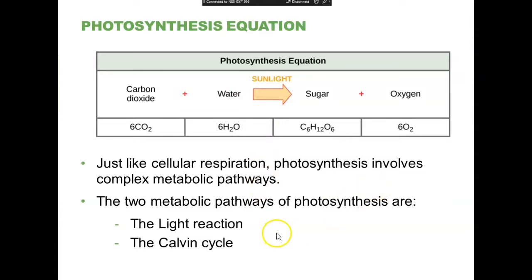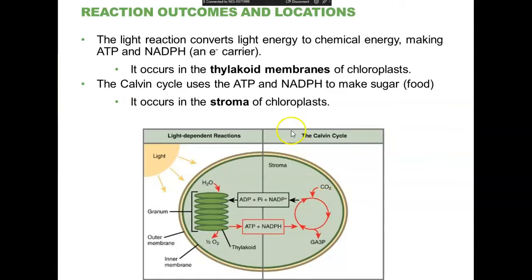The photosynthetic process involves two major regions: the light reactions and the Calvin cycle — also sometimes referred to as the dark reactions, not because they have to take place in the dark, but because they are themselves light-independent. Within a chloroplast, the outer membrane, the inner membrane, and then the membranes of the thylakoids is where you'll find all of the molecular equipment for the light reactions.